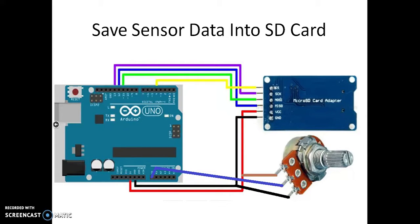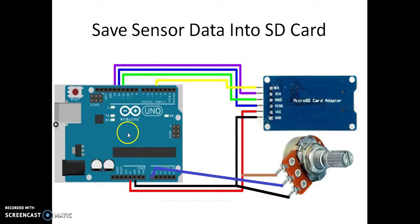Hello, this is Mamun once again with SPI communication system. In the last two videos I talked about how SPI communication system works, the master-slave concept, and I gave an example of how the SD card module connects with Arduino and how Arduino can send data to the SD card module using SPI. If you do not have any idea about SPI communication system, I highly recommend you to watch those previous two videos.